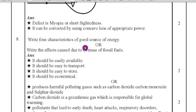Eighth question, write four characteristics of good source of energy or write the effect used due to the overuse of fossil fuels. Here option, any one question you can answer. First question, it should be easily available. It should be easy to transport. It should be easy to store. It should be economical. If it is good fuel, these characters should be there.